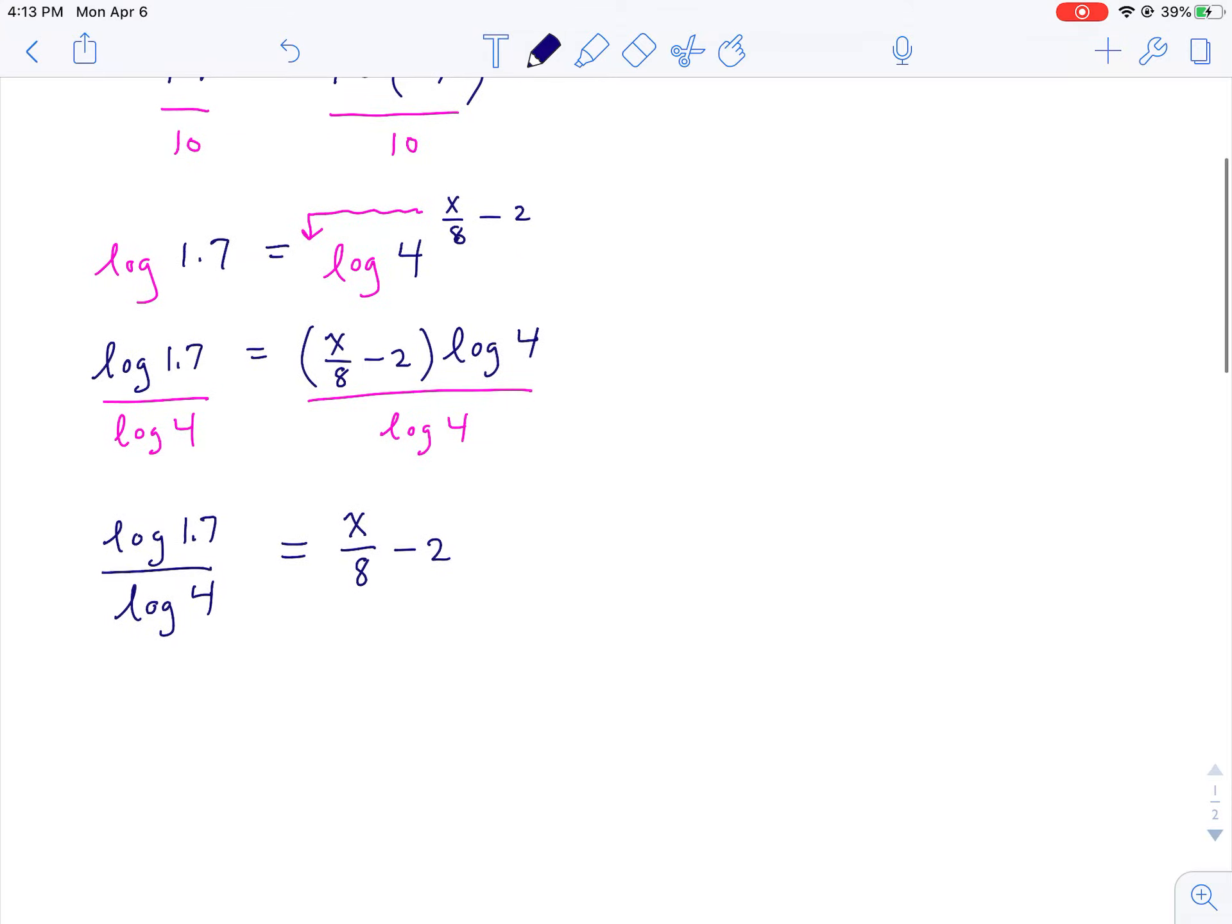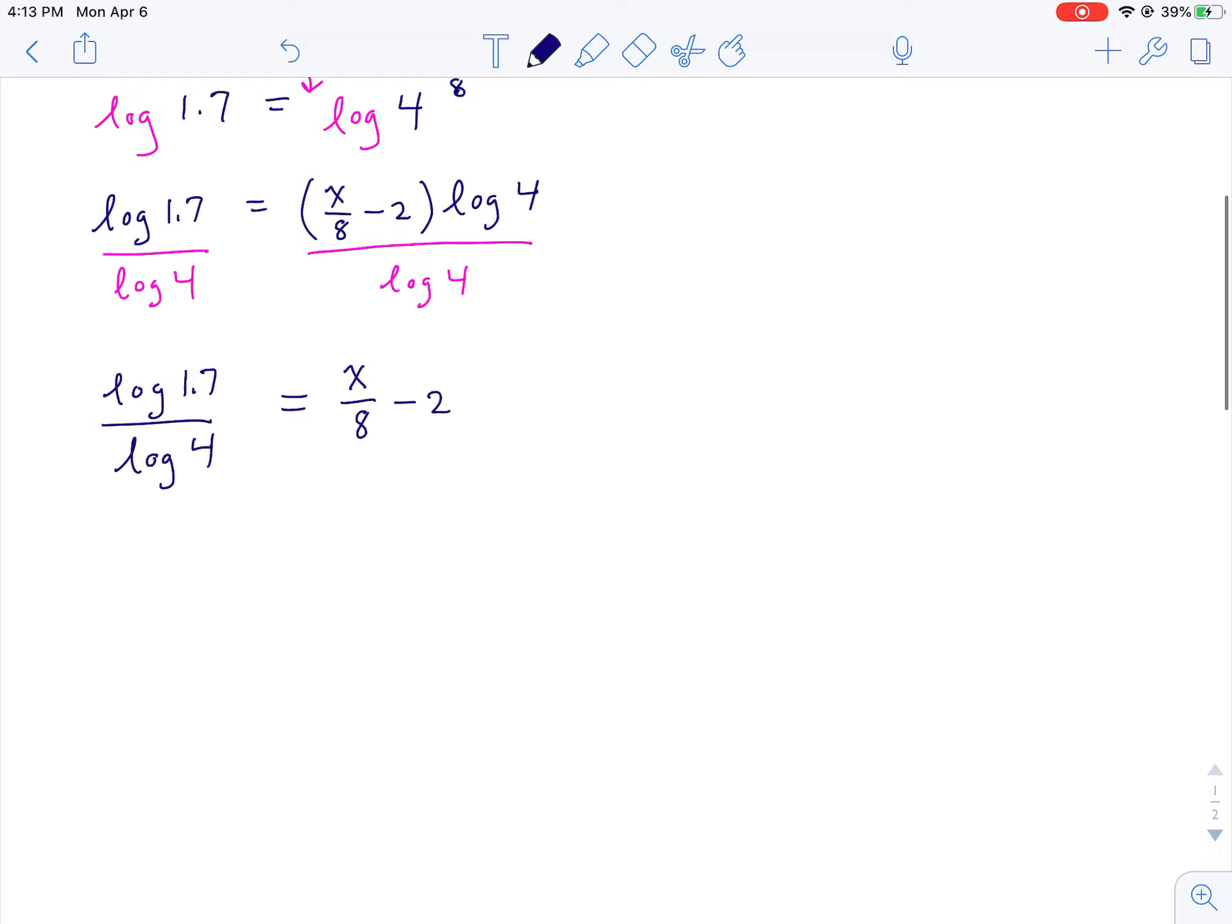And then finally I'm going to do two steps in one here, just to speed this up a little. What would I do to both sides? I would certainly add 2, and then I'd multiply by 8, right, that would be the step to get x by itself. So I'm going to add 2 first of all, so what are you going to have? You're going to have log of 1.7 over log of 4, I'm going to add 2 to that, and then you've got to multiply the whole thing by 8. So that's your solution right there.